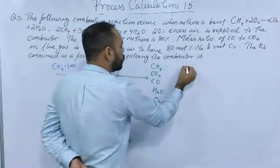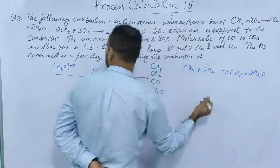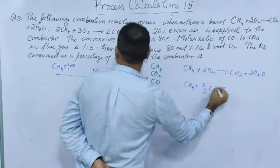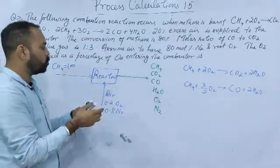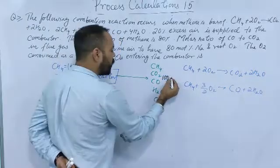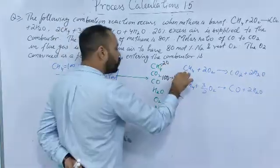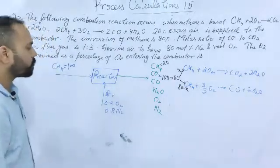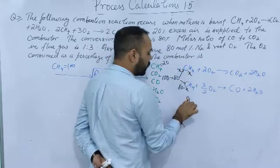The reaction is CH4 + 2O2 → CO2 + 2H2O (complete combustion), and CH4 + 3/2 O2 → CO + 2H2O (partial combustion). Suppose you have 100 moles of CH4. Out of that, only 80 moles are going to react because 80% is the conversion. The remaining 20 moles of CH4 are unreacted. Out of 80, suppose x moles react by the first reaction, and therefore 80 minus x react by the second reaction.